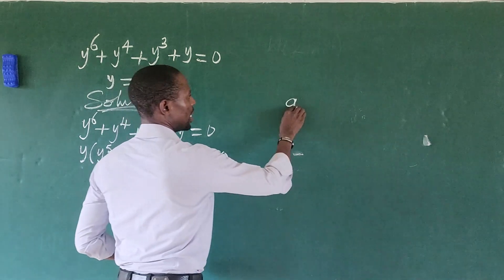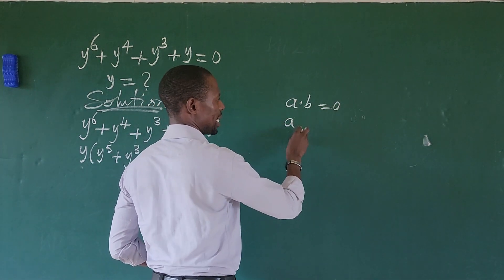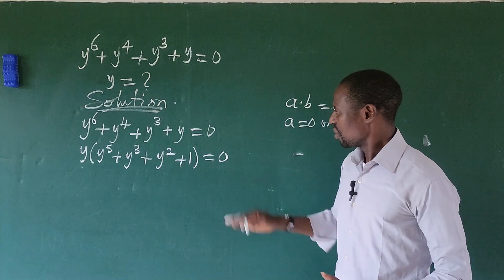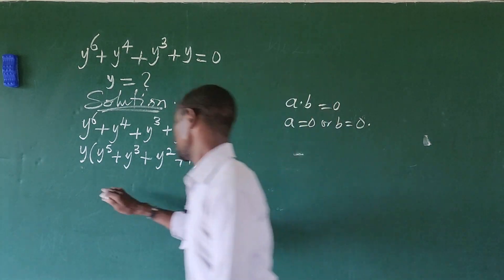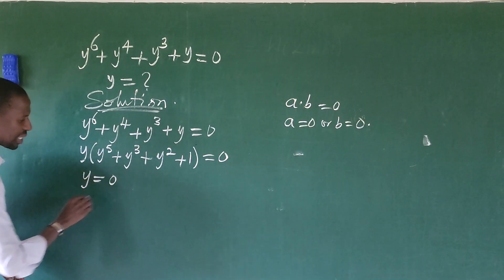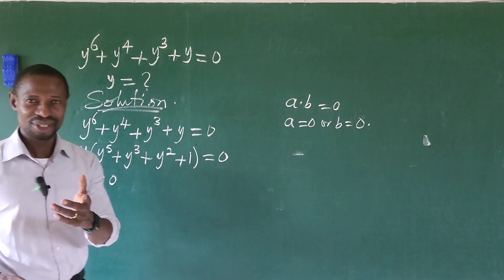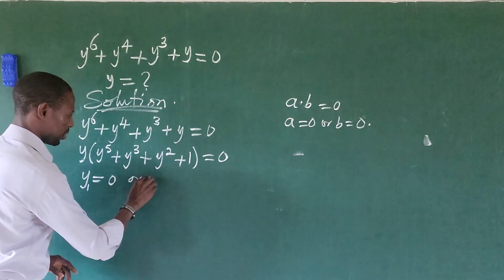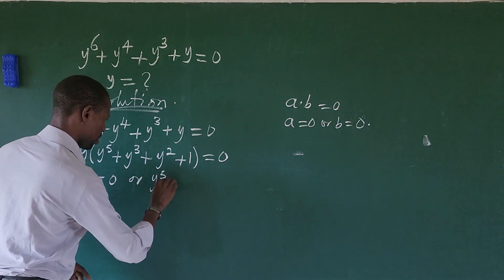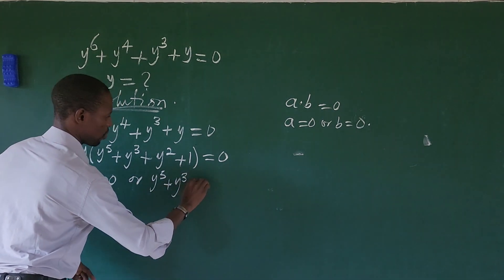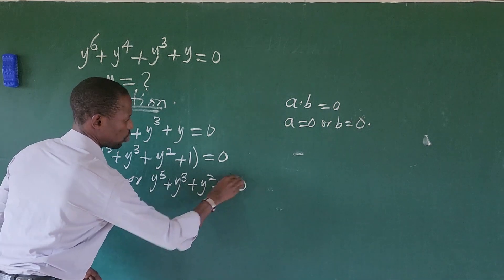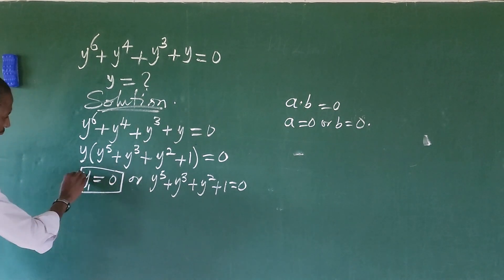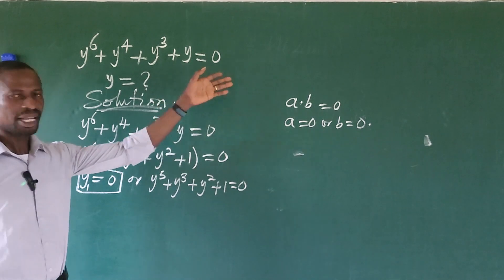The zero product rule says that if you have a·b = 0, this implies a = 0 or b = 0. So what we do here is equate each factor to 0. Doing that, y = 0. So we've got the first root to our hexic equation: y₁ = 0. If we put 0 into everything here, that will give us 0.